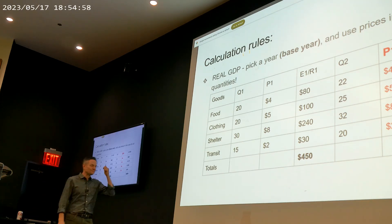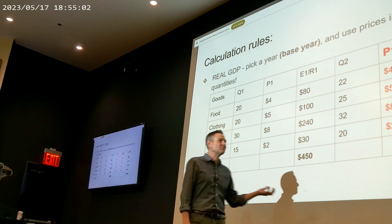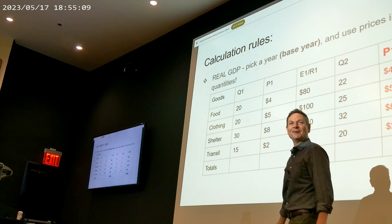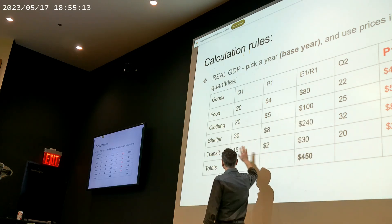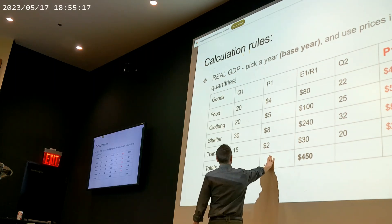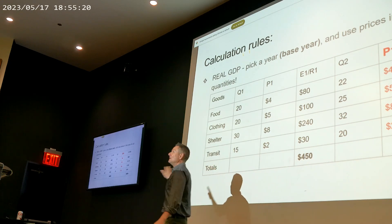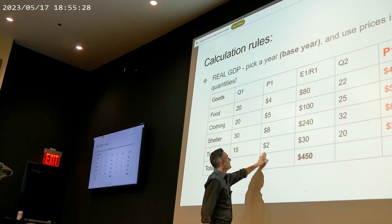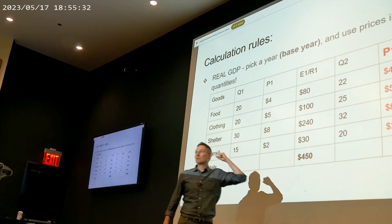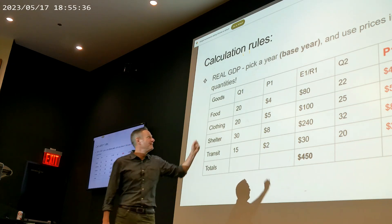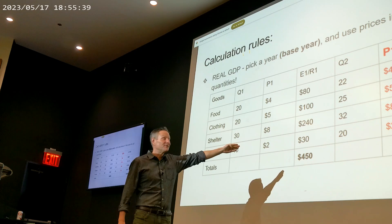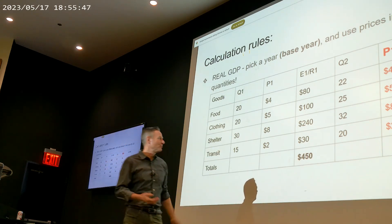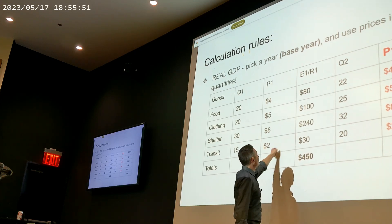How do we solve this problem? An insightful and simple way is to not let the units of measurement change over time. What that means is: we let the quantities change, but we fix the prices at year-one prices — P1. We measure our quantity changes using the prices from year one. We can calculate expenditures — that's what E1R1 means, expenditures and revenues. This is how much people spent on the product in a given year; this is how much producers produced and sold. Both are suitable ways to measure total output. So we fix the prices and compute Q1 times P1, add them up, and get 450.